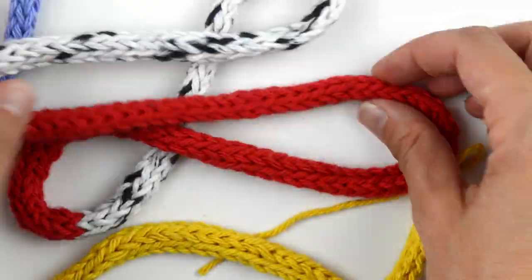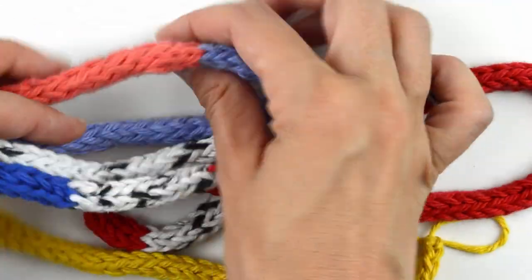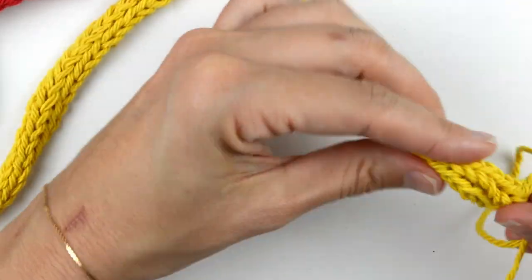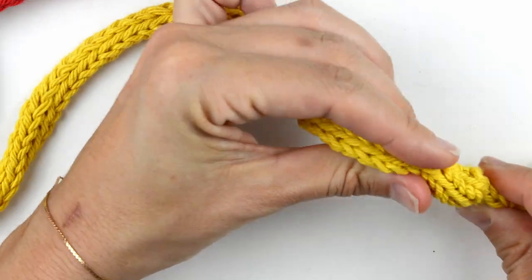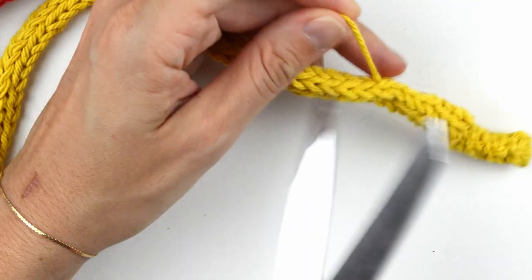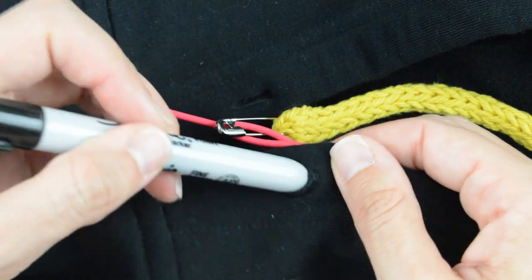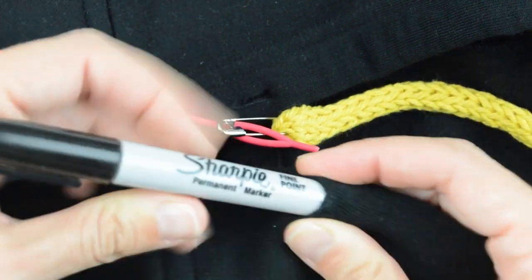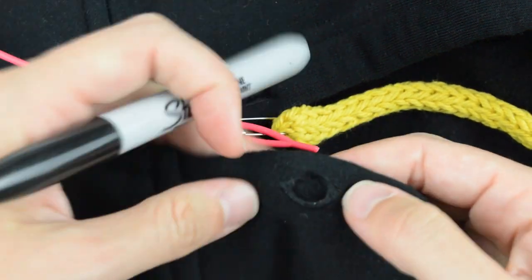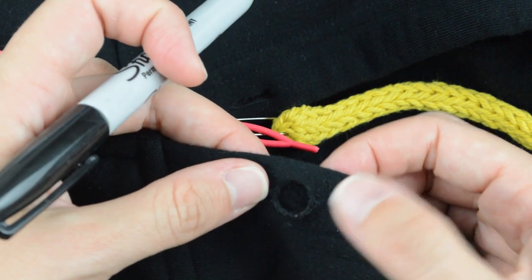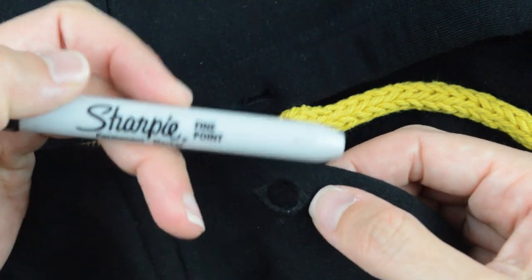The nice thing about sewing your tails in with I-cords is weaving isn't necessary. You can just run your needle right down the inside of the cord and cut the remaining tail. If you're planning on using your I-cord as a drawstring, make sure the openings are large enough to fit your cord. I used a marker to slightly stretch out the opening so the cord would easily feed through.